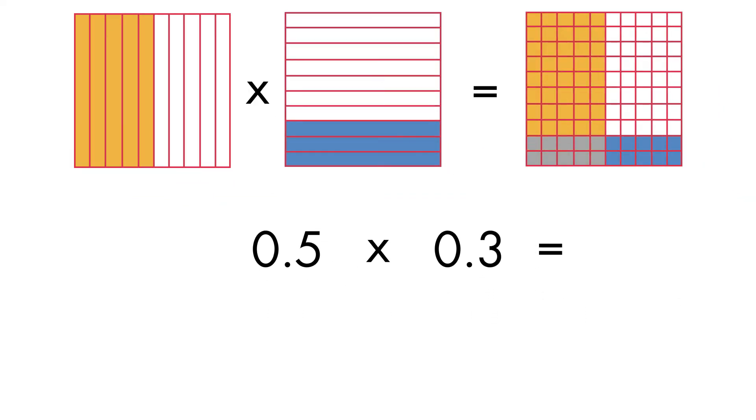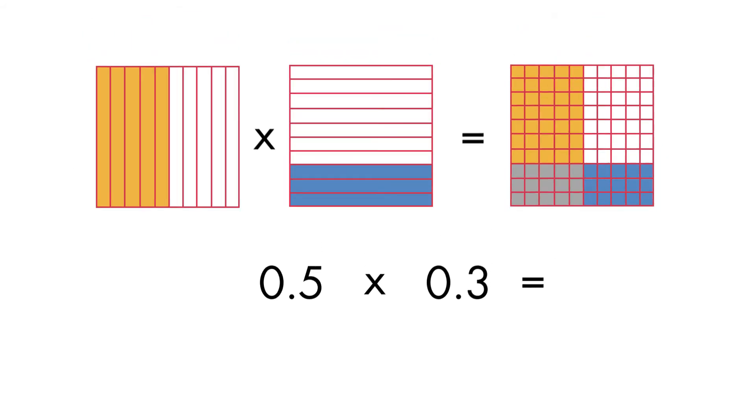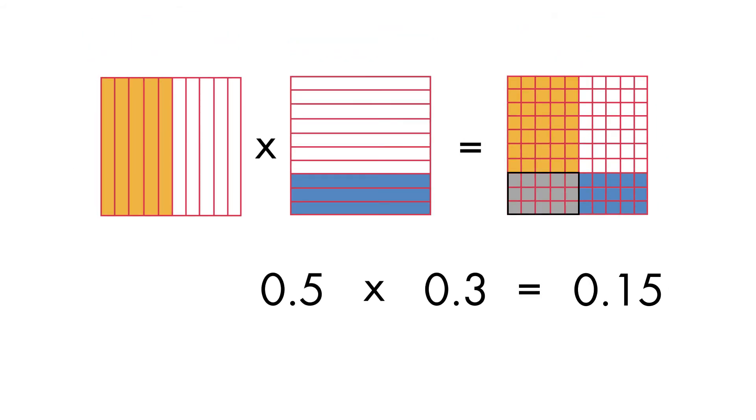Then we shade the same 5 tenths and 3 tenths on our hundredths model. The product is shown by the overlapping squares. There are 100 squares in all, and there are 15 squares that overlap, or 15 hundredths.